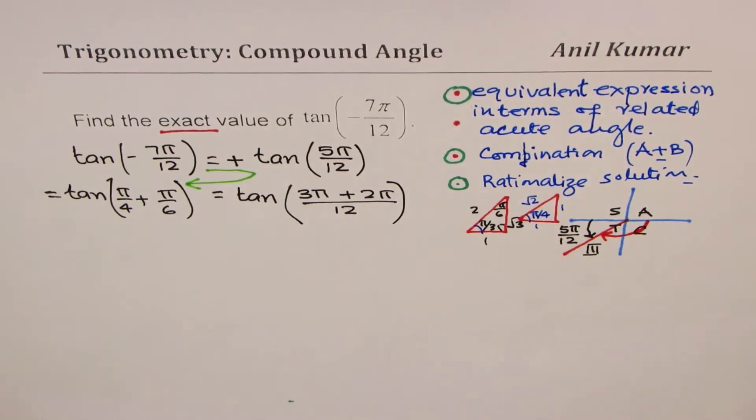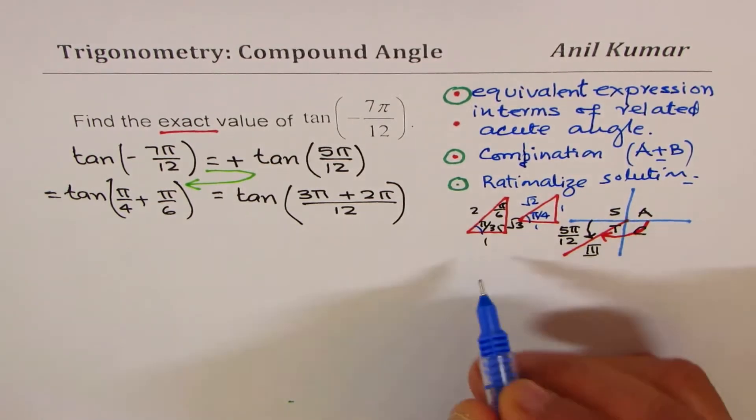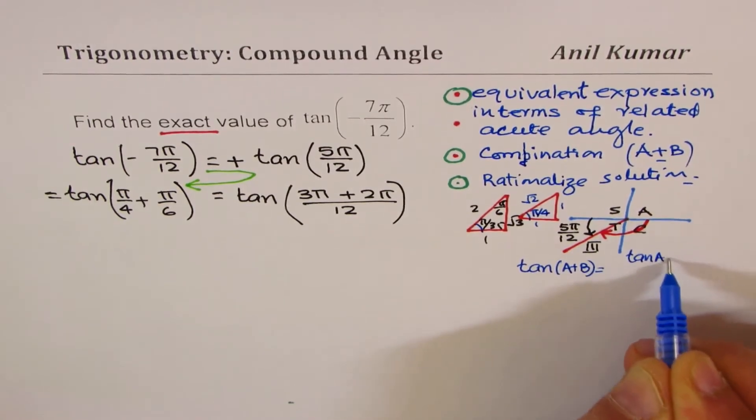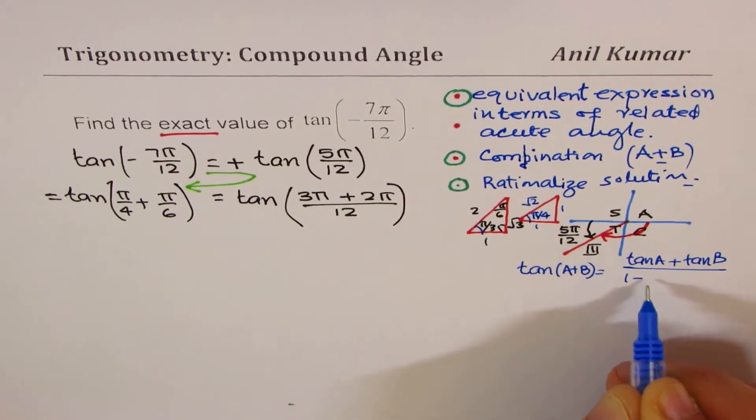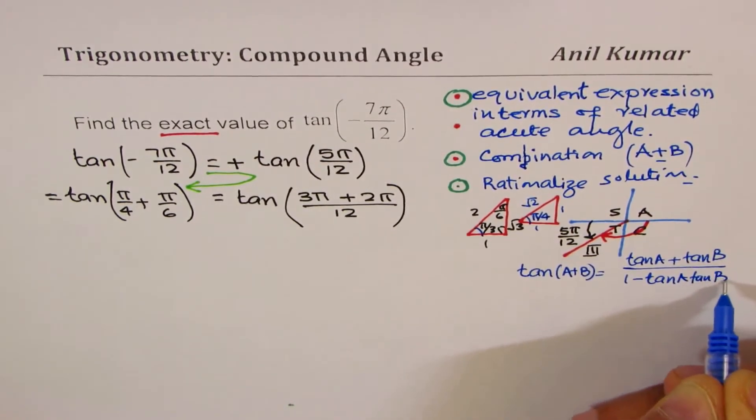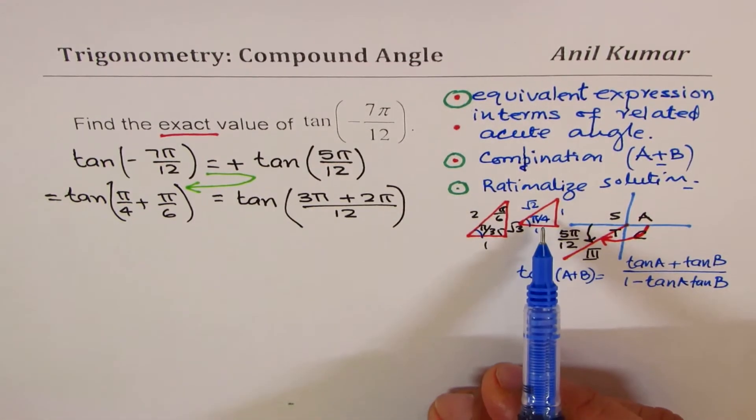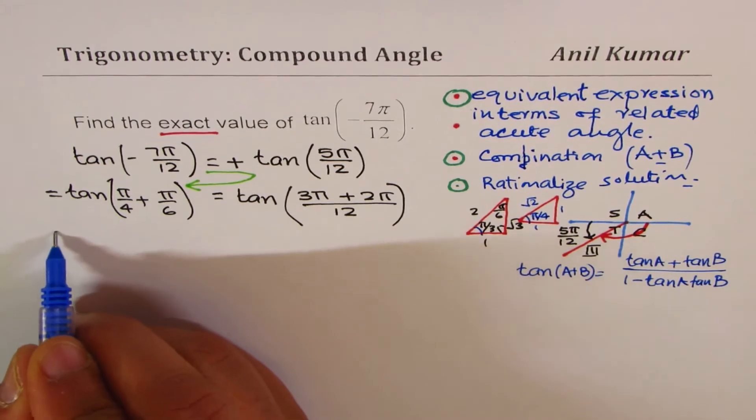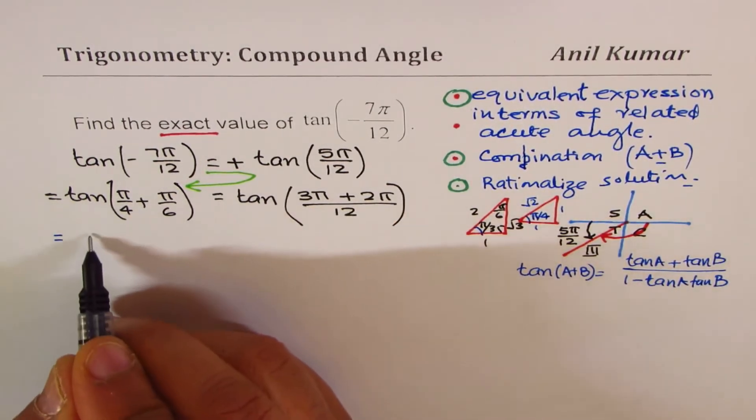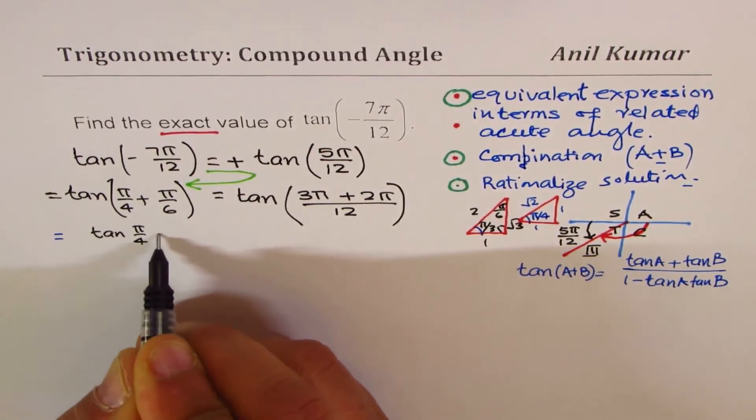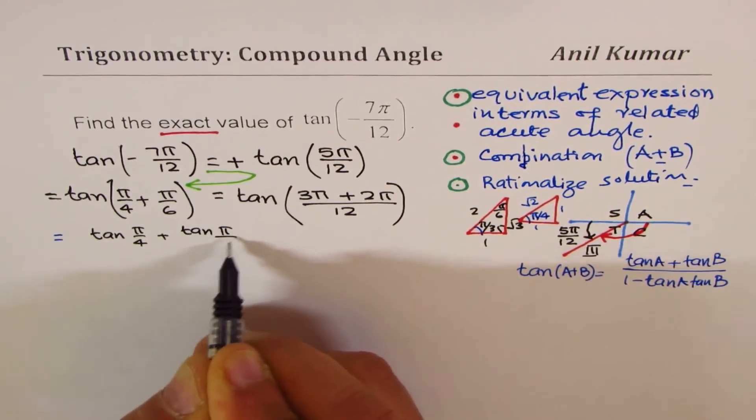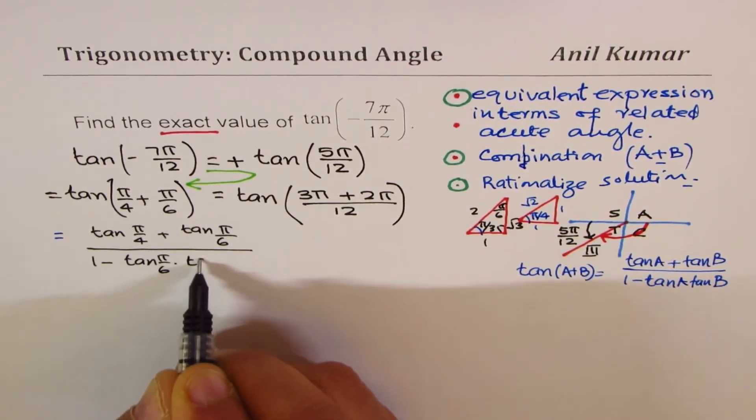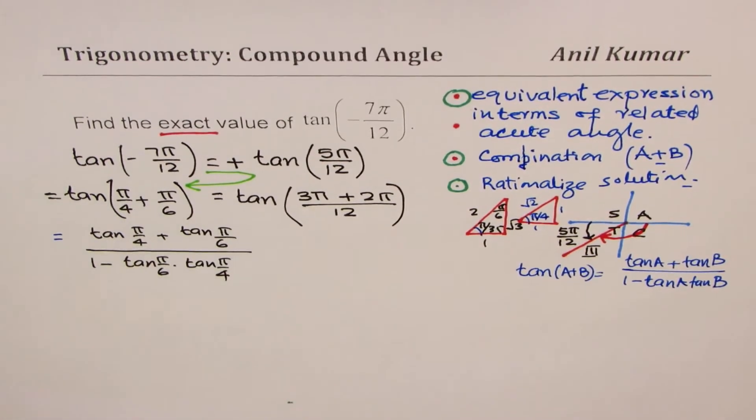Now you know what tan(A+B) formula is. So let's rewrite the formula. We have tan(A+B) equals tan A plus tan B over 1 minus tan A tan B. As far as π/4 is concerned, we are looking to this value which is 1. π/6 is concerned, we are looking from that direction which is 1 over √3.